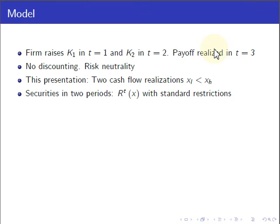For this presentation and for the main body of the paper, we look at simply two cash flow realizations: cash flows can be high or low. For those of you who work with financial contracting models, given the right assumptions, all the results will also extend to a continuum of cash flows — we explain how to do this in the paper. We focus on standard securities and impose standard assumptions such as that the securities are monotone and that both parties — the owner-manager on the one hand and the investors on the other — are protected by limited liability.